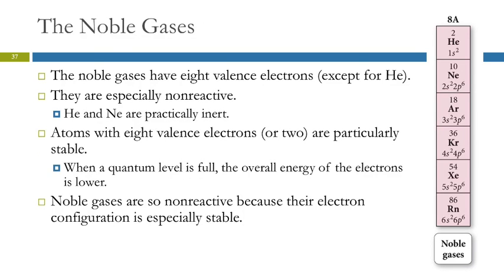If we look at the noble gases, here is just that piece of the periodic table. We notice that they all have eight valence electrons except for helium. Whatever period they are in, it's that number n s2, n p6. They all end the same way.